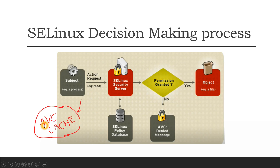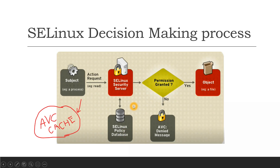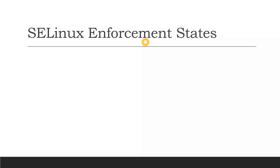This is the SELinux decision-making process. Everything starts from the AVC cache. If a result is not found there, we go directly to the security server, which checks the policy database where different policies are written. Based on the data retrieved, we decide if permission is granted or not. The security context of the app and files is applied from the installed policy, which also populates the security server's matrix.